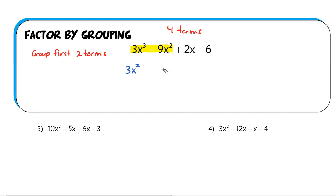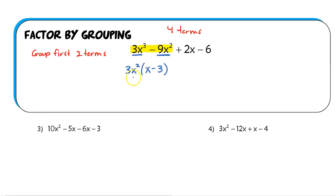I factor it just like we normally would when taking out the GCF. Looking at the first term, I'm taking out 3x squared: 3 divided by 3 gives me 1, and x cubed divided by x squared leaves x to the first. For the second term, negative 9x squared divided by 3x squared leaves negative 3. So right now I have 3x squared times x minus 3, and if you were to distribute that 3x squared back out, you'd end up right back where you started.